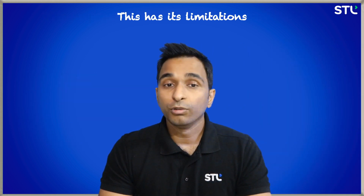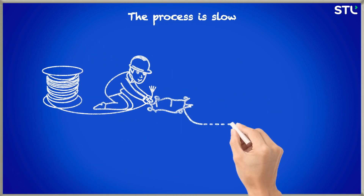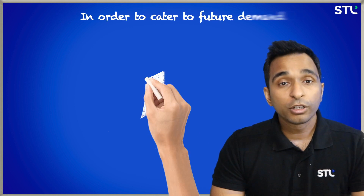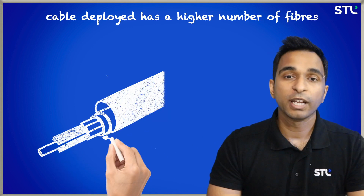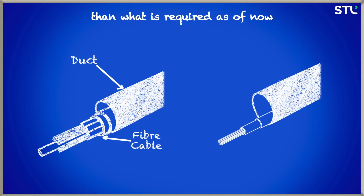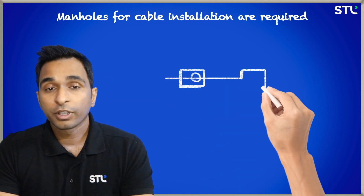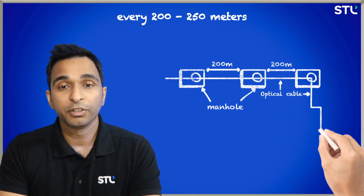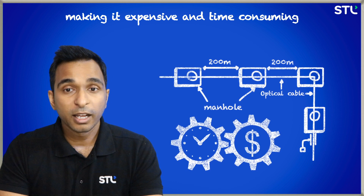This has its own limitations. The process is slow — only 15 to 30 meters can be deployed per minute. In order to cater to future demand, the cable deployed has a higher number of fibers than what is required as of now. Manholes for cable installations are required every 200 to 250 meters, making it expensive and time consuming.